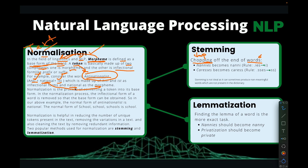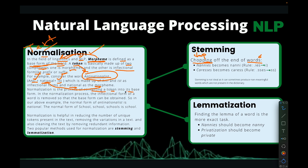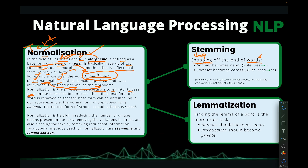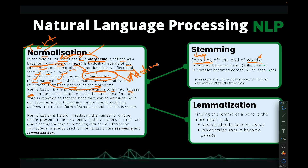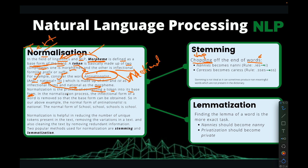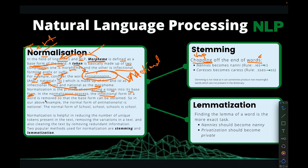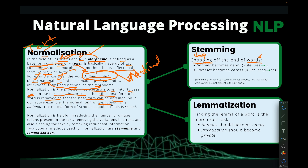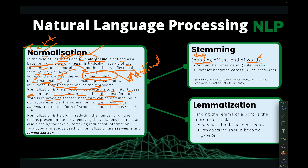Normalization is the process of converting a token into its base word or base form. For instance, we want to convert 'anti-nationalist' to 'national'. That process of converting anti-nationalist to national is what is referred to as normalization. In the normalization process, the inflectional parts — that is the suffix and the prefix — are removed so that the base form can be obtained. We remove the 'anti' and the 'ist' at the end, and we end up with 'national'.